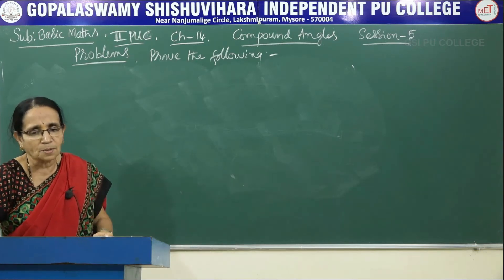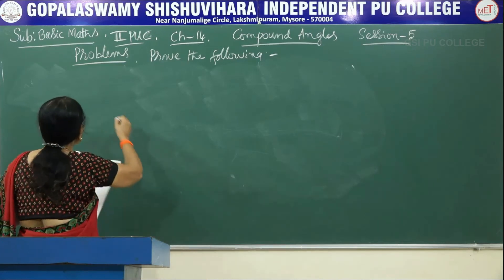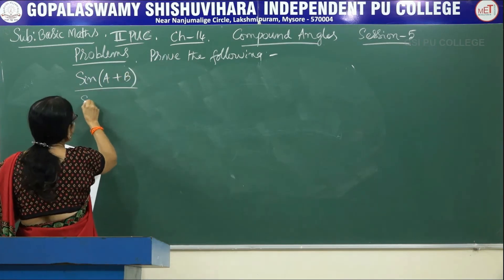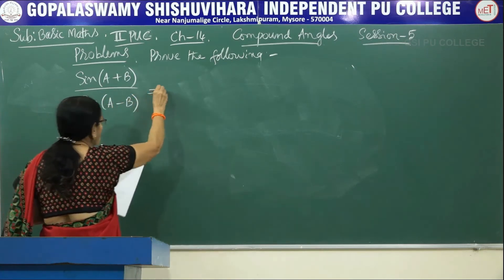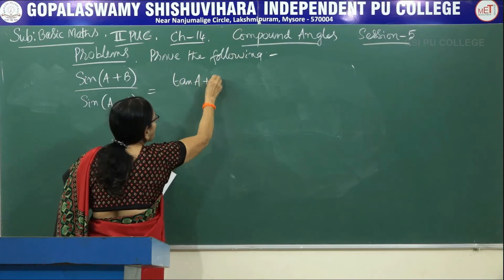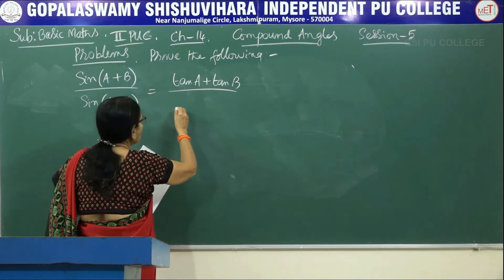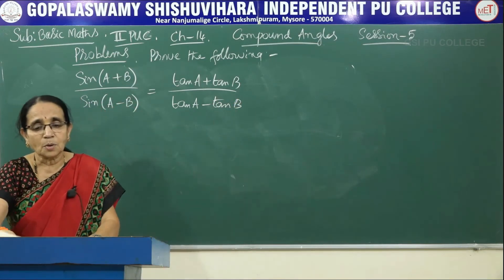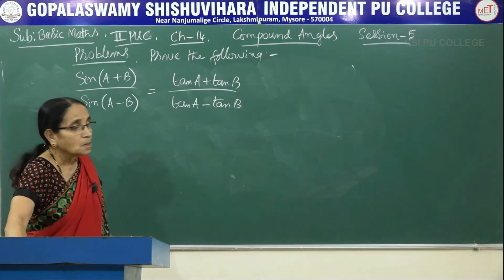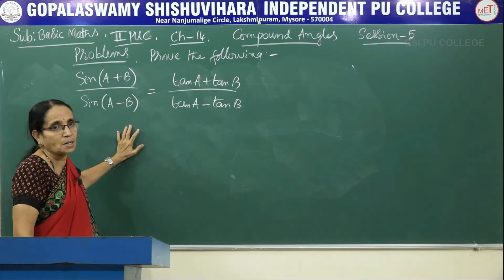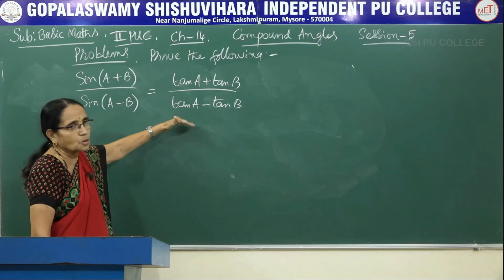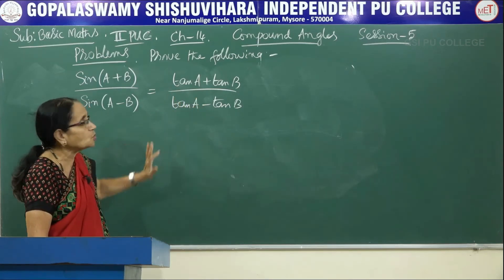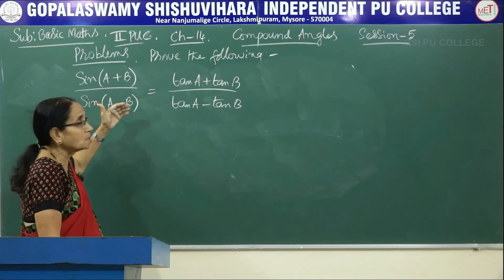Now let me consider another problem: prove that sin(A+B) divided by sin(A-B) equals (tanA + tanB) divided by (tanA - tanB). On the left hand side we have compound angles, and on the right hand side the numerator is a sum and the denominator is a difference of two tan ratios.